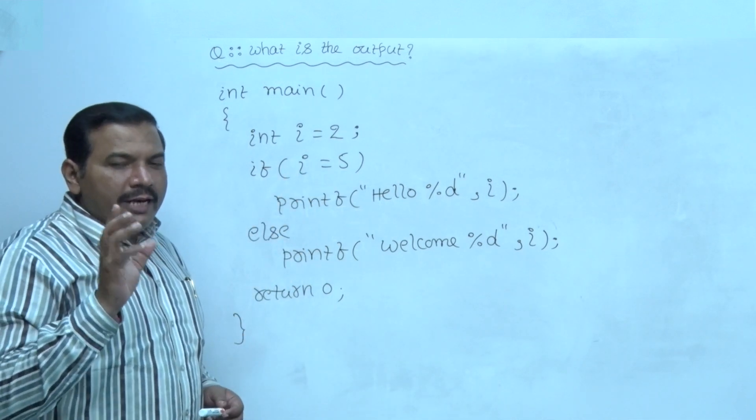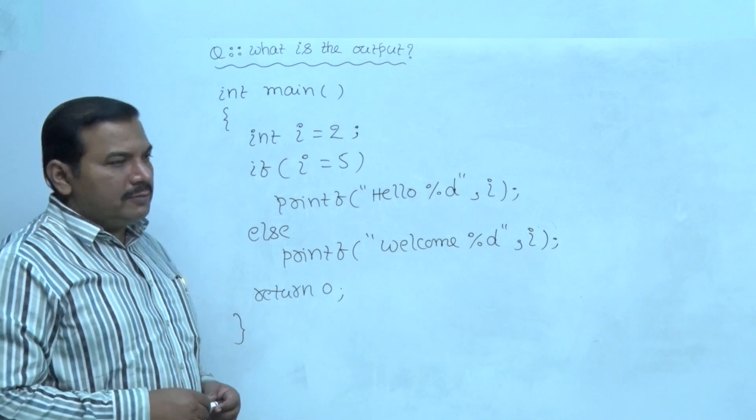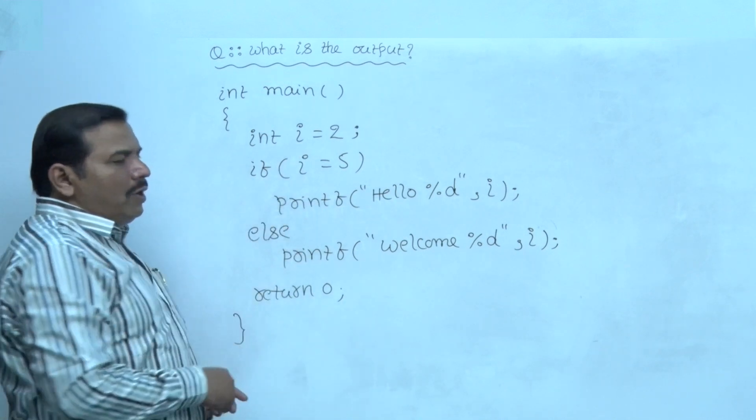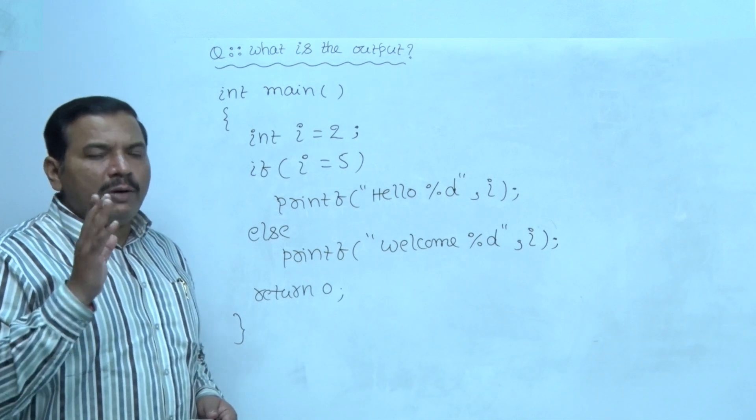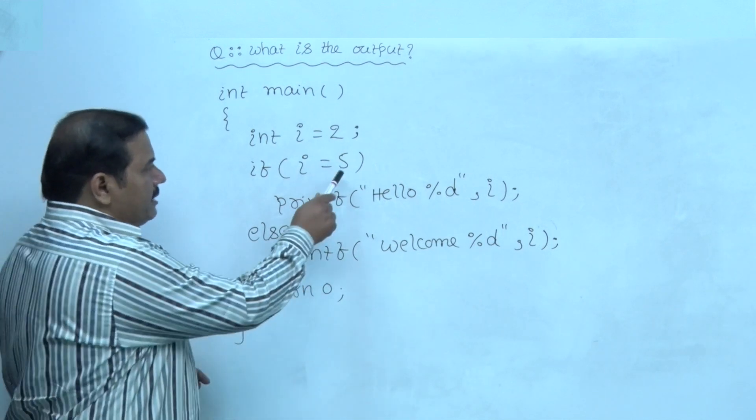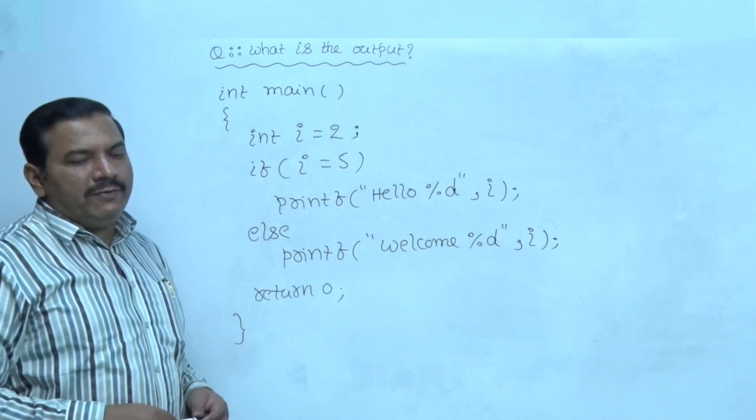It is not a relational operator is equal to. The single equal to operator is an assignment operator. This operator assigns the right side expression value to the left side variable.